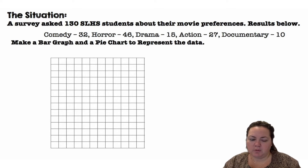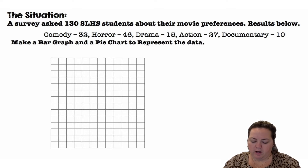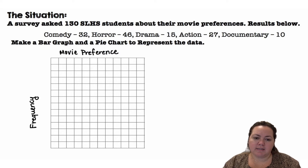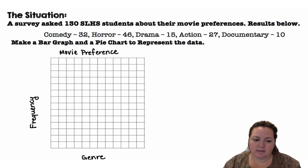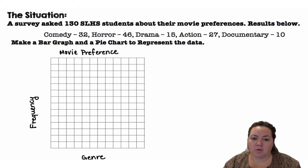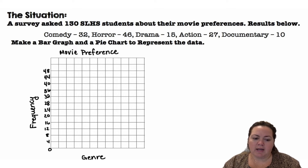So we have counts: 32 people chose comedy, 46 people chose horror. We're going to set up our bar graph. We'll put a title — movie preference — on the side we're going to do frequencies, which are counts, and on the bottom we'll put the genres. We need to decide what we are going to count by. Our largest number is 46, so I went ahead and counted by four so that I could fit enough on there.